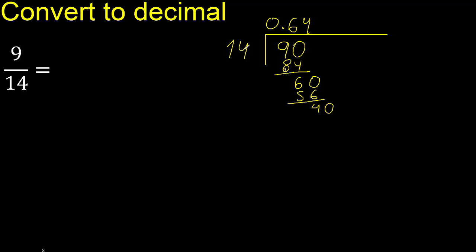We now have 40. 14 multiplied by 3 is greater, so we multiply by 2, which gives 28. We subtract and complete.